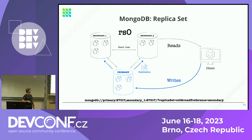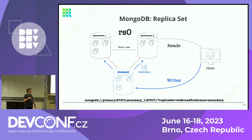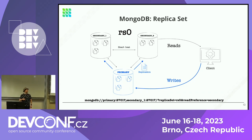The replica set is a typical primary-secondary topology. All writes are always directed to the primary, which holds the data, and the data is replicated to secondaries — which first act as backup replicas and second can take some of the read load off the primary. If a primary goes down, the secondaries enter an election phase and will among themselves elect a new primary. This is facilitated by a heartbeat running between all replica set nodes, meaning every node is aware of the existence of all the others.